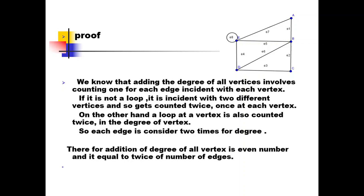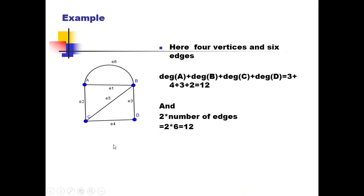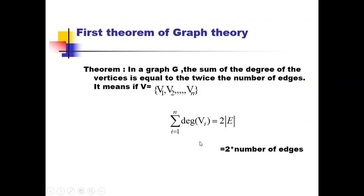Now let's apply this to an example. This graph has four vertices and six edges. We calculate: degree of a is 3, degree of b is 4, degree of c is 3, and degree of d is 2. The sum is 3 + 4 + 3 + 2 = 12. The number of edges is 6, multiplied by 2 gives 12. The theorem is verified. For any graph, the sum from i equals 1 to n of degree of vi always equals two times the number of edges.